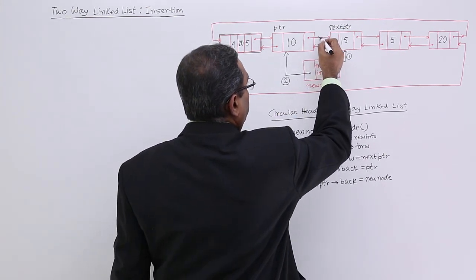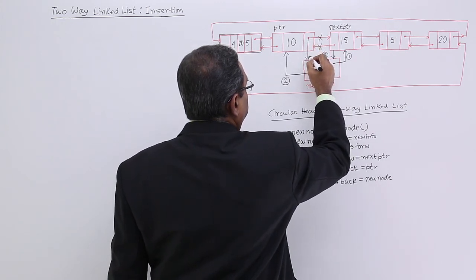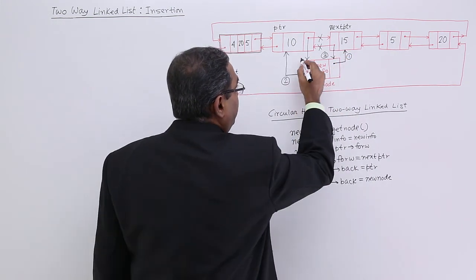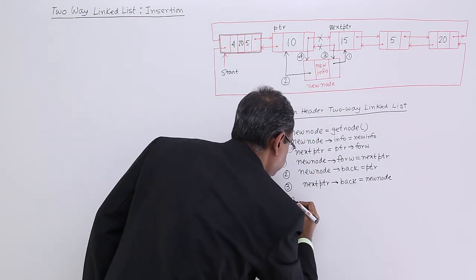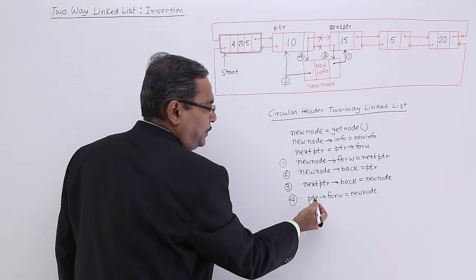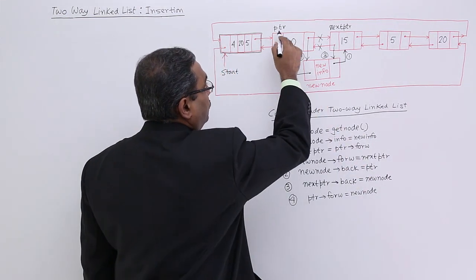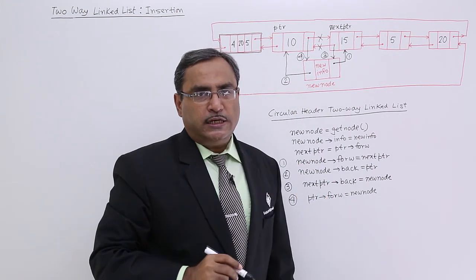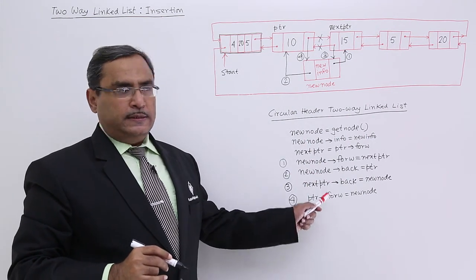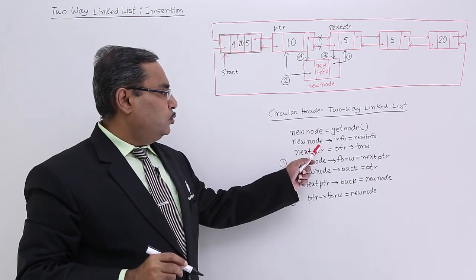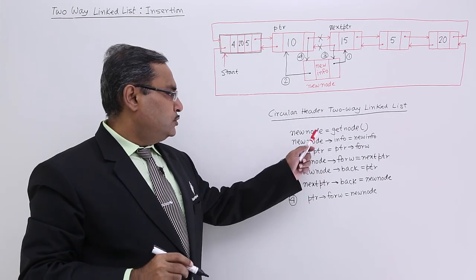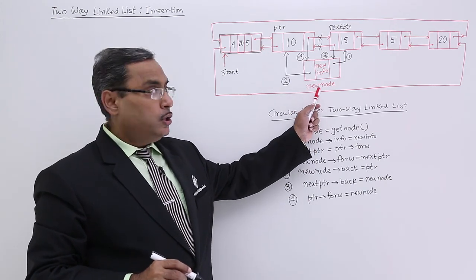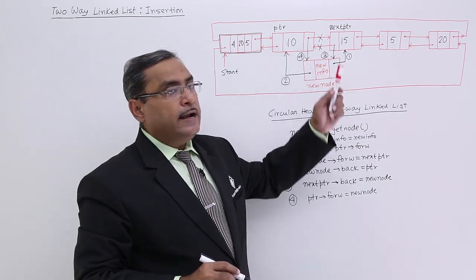Now I do not want to keep the old link. I want to connect it in the new way — this is step 4. PTR implies forward is equal to new node. So, writing these number of instructions — statements 1, 2, 3, 4, 5, 6, 7 — these 7 statements will allow me to insert this particular node known as new node in between PTR and next PTR.